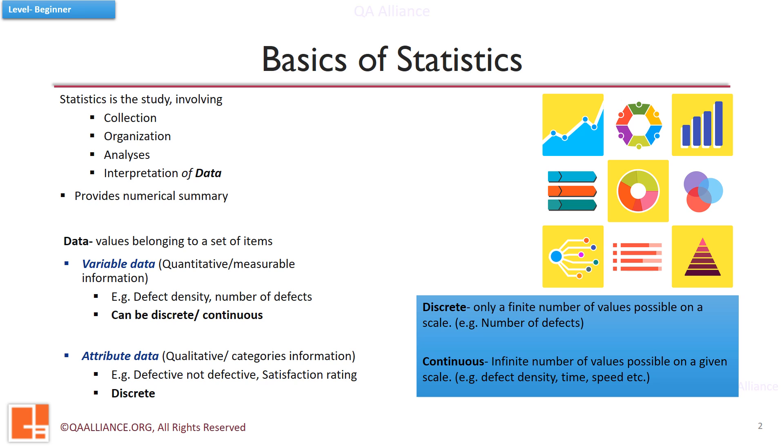While in case of continuous data, infinite number of values are possible on a given scale. An example for discrete data is number of defects, which can start from zero, one, and go up to n, though n will have a limit. While if we talk about an example of continuous data, that is defect density, there are infinite number of values possible between zero to n. Here the defect density could be any number, it can also be in decimal numbers.